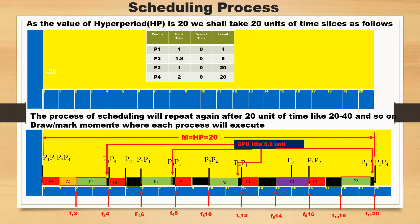P4 is yet to run because of its highest burst time of 2. Since the frame size is 2, a new frame begins every 2 units of time. The scheduling points are at the beginning of each frame: 2, 4, 6, 8, 10, 12, 14, 16, 18, and 20. Scheduling is checked only at the beginning of each frame, not at each unit of time.